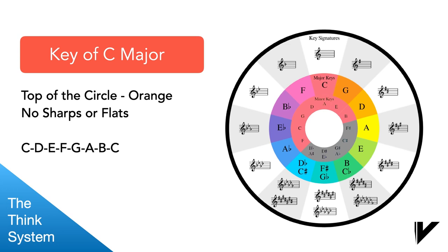So we're going to start at the top of our circle of fifths with the key of C major. It's the orange key at the top. And if you look above it, you see where it says key signatures and you have a treble clef with no flats or sharps. That is the key of C major. Now because it's the key of C major, we know we're going to start on C and end on C. So all we do is go up alphabetically through the musical alphabet, which is A, B, C, D, E, F, G and it starts over again with A.